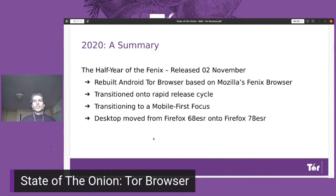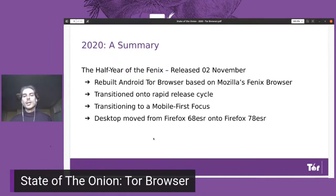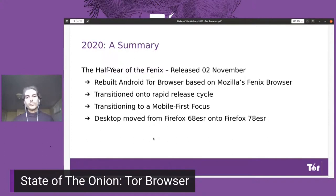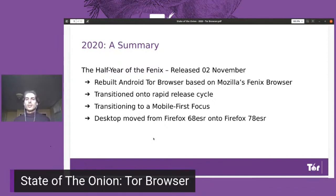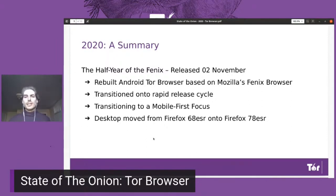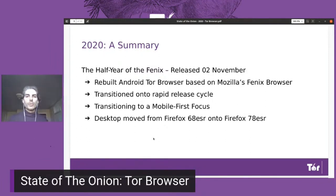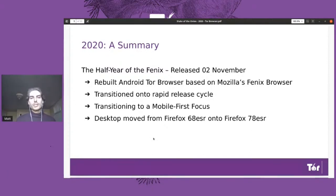The second half of the year was really focused on transitioning Tor Browser from an old version of Firefox onto a new one. Historically, Tor Browser is based on the extended support release of Firefox. The previous version was Firefox 68 ESR, and we moved the desktop onto Firefox 78 ESR. The reason for using ESR is that it provides a stable foundation upon which we can build Tor Browser enhancements and functionality.